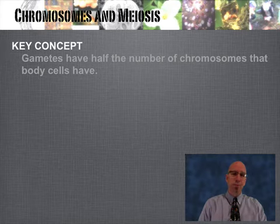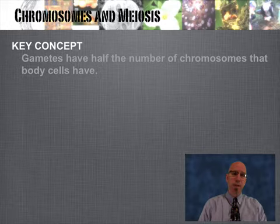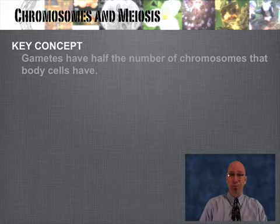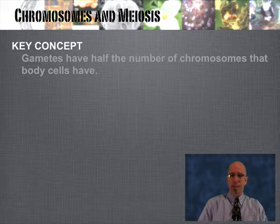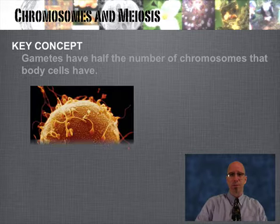Hey, this is Mr. Peterson. This screencast is about the process of meiosis and the relationship the process has with chromosomes. We're going to take a look at chromosome number, chromosome type, and what that has to do with sexual reproduction. Big ideas: sexual reproduction and meiosis, tied together.